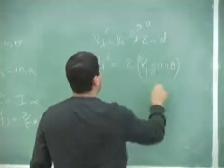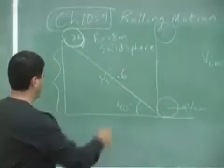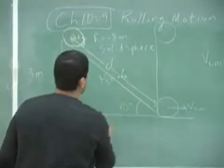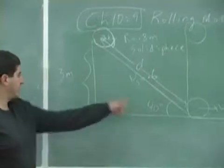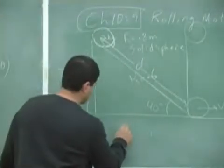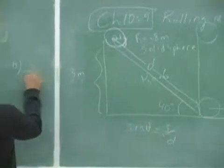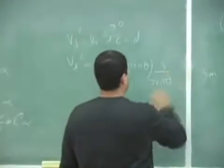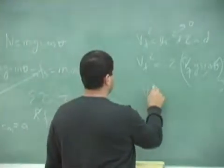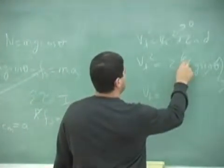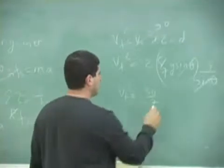What is D? D is the distance that it is traveling, which is 3 divided by sine of theta — since sine of theta equals 3 over D. So D is 3 over sine theta. The theta and sine theta cancel, so you're left with V final squared equal to 10 times 30 divided by 7, times 9.8.